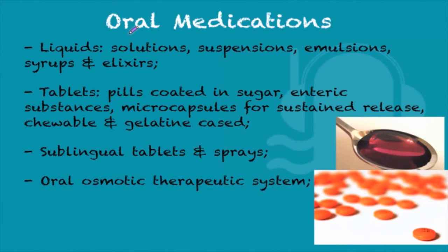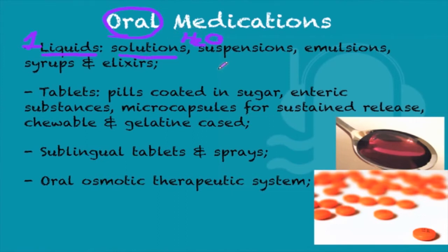The first type of drug formulation I would like to talk about is oral medications. There are several subtypes, the first of which is liquids. Solutions are smaller than one micrometer particles dissolved in water. Suspensions are also dissolved in water but they are particles larger than 500 micrometers. Then you have emulsions, which are a mix of liquids. Syrups are sugar-based solutions and elixirs are alcohol-based solutions.